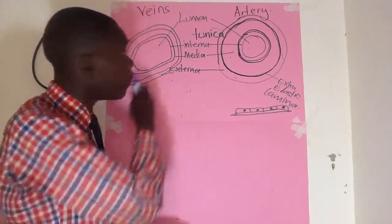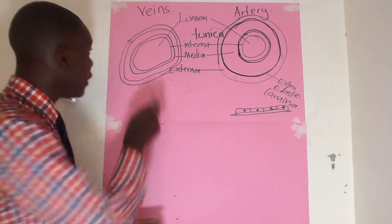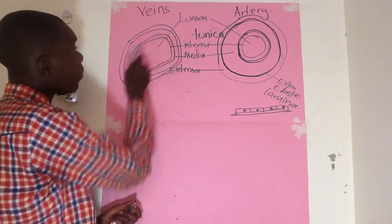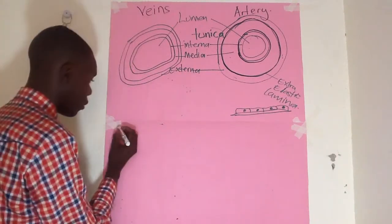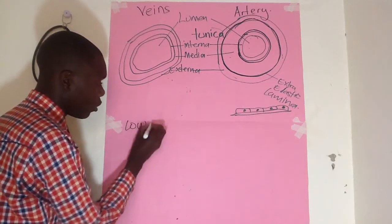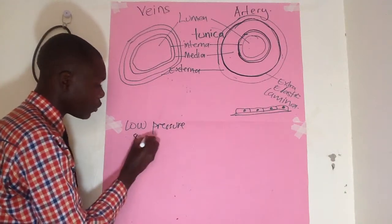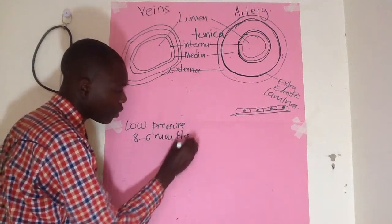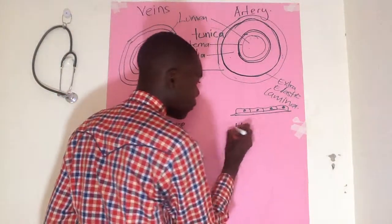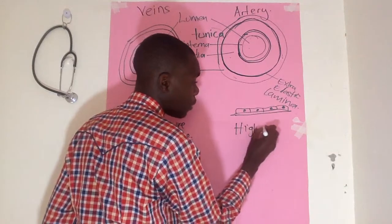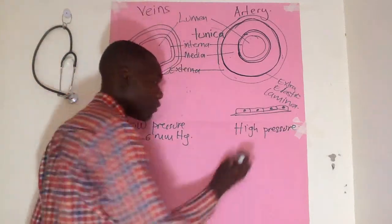Now we are going to start seeing differences between veins and arteries. The first difference: veins have a thinner tunica media because blood is at relatively low pressure — around six to eight mmHg — whereas in arteries blood is moving at very high pressure, around 120 over 80 mmHg.